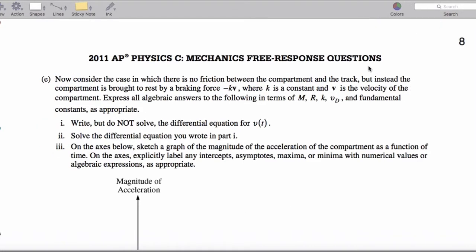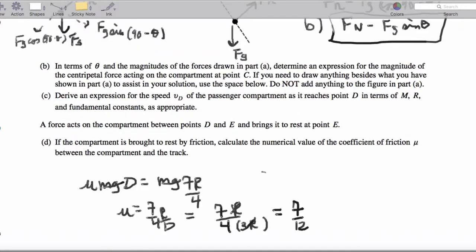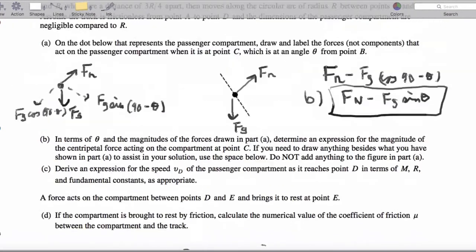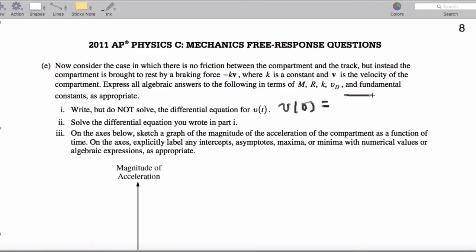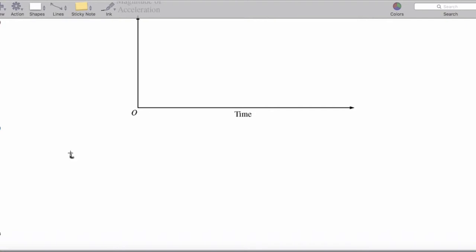Moving on to part E. There's no friction, but there's a breaking force. So, let's get V as a function of time. We know, first of all, that V0 equals, let's get that number from the previous page, square root of 7gr over 2. Great. And, we want to write but not solve the differential equation. So, here we go. We're going to say negative KV equals MdV dt.